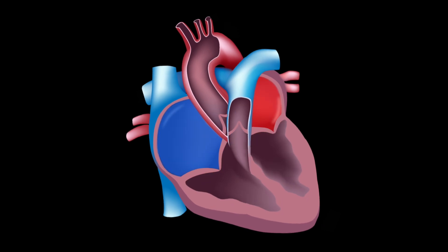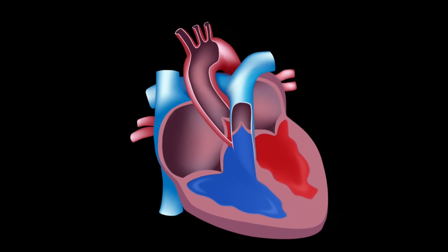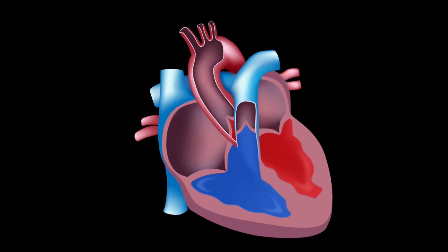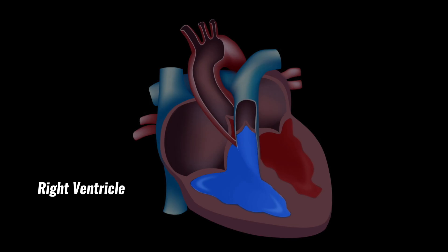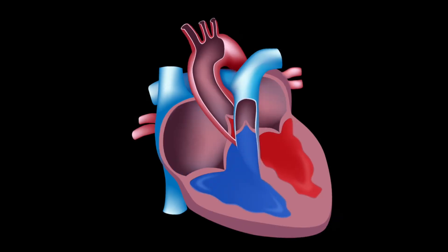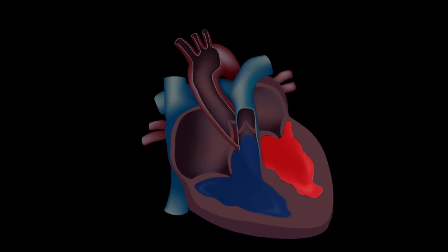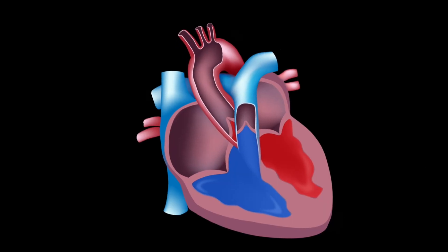The heart consists of four chambers called the right atrium, right ventricle, left atrium and left ventricle. A wall of muscle called the septum separates the sides of the heart.